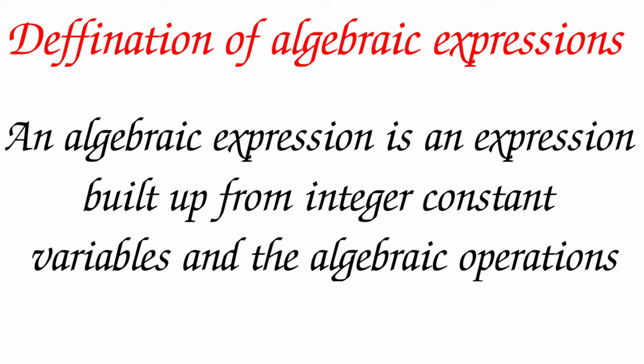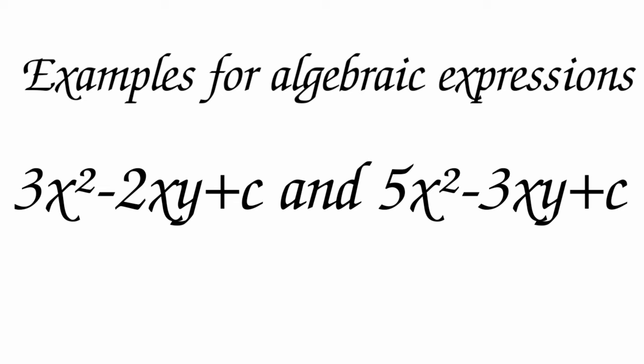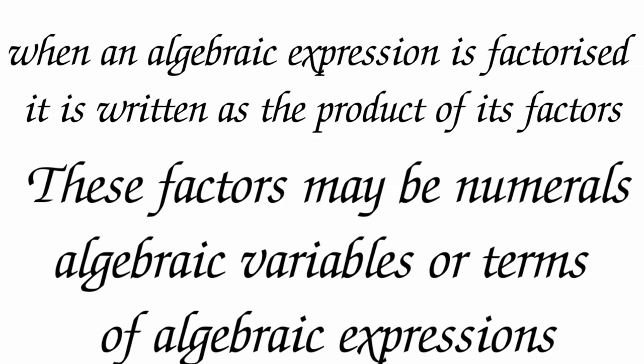An algebraic expression is an expression built up from integer constants, variables, and the algebraic operations. Examples: 3x² - 2xy + c and 5x² - 3xy + c. When an algebraic expression is factorized, it is written as the product of its factors. These factors may be numerals, algebraic variables, or terms of algebraic expressions.